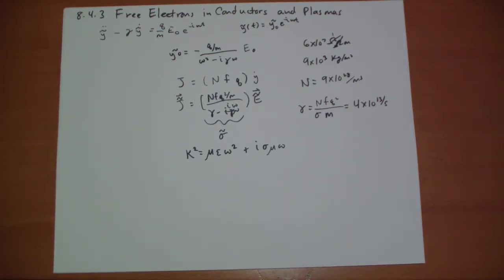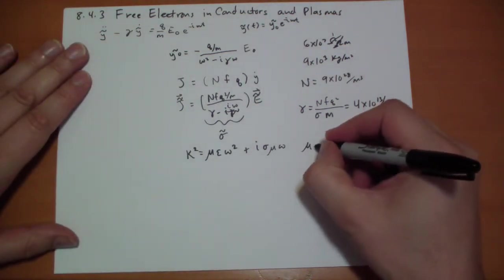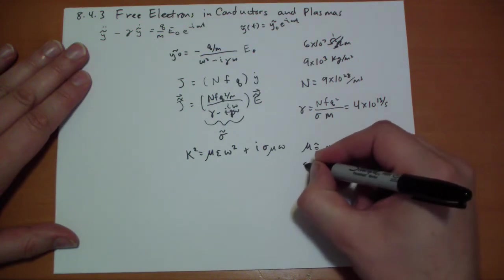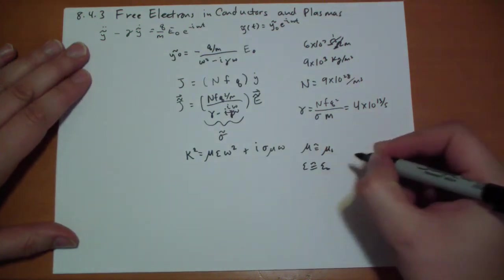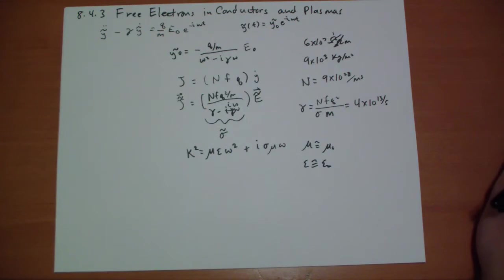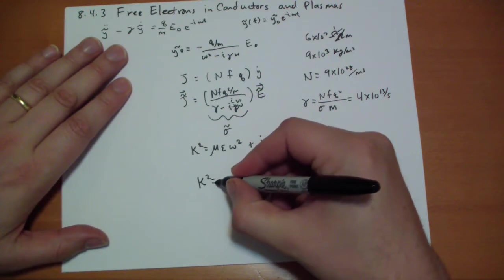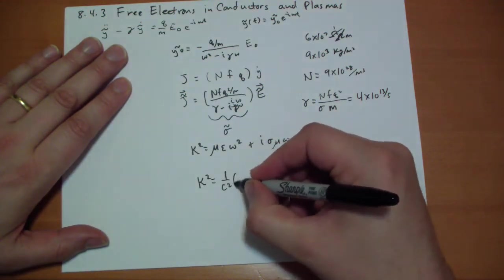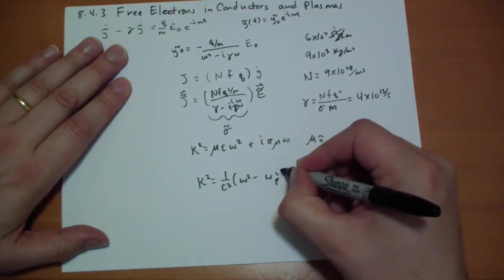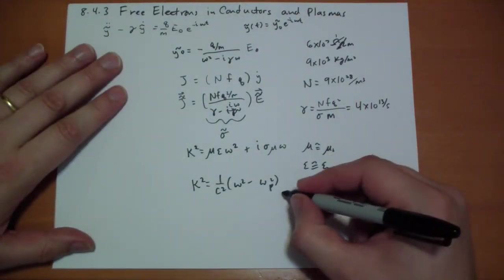One particular interesting case is what happens in plasmas. When we have gases where basically our mu is about equal to mu naught and epsilon is about equal to epsilon naught. And so in this case, our equation for kappa squared becomes one over c squared times omega squared minus omega p squared, where omega p squared is the plasma frequency.